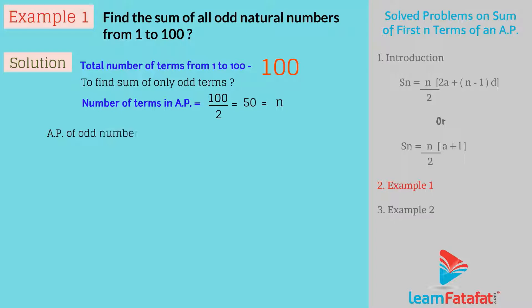The AP of odd numbers is represented as 1, 3, 5, 7, 9 till 99. So the first term of AP that is a equals 1 and common difference d equals 3 minus 1 equals 5 minus 3 equals 2.